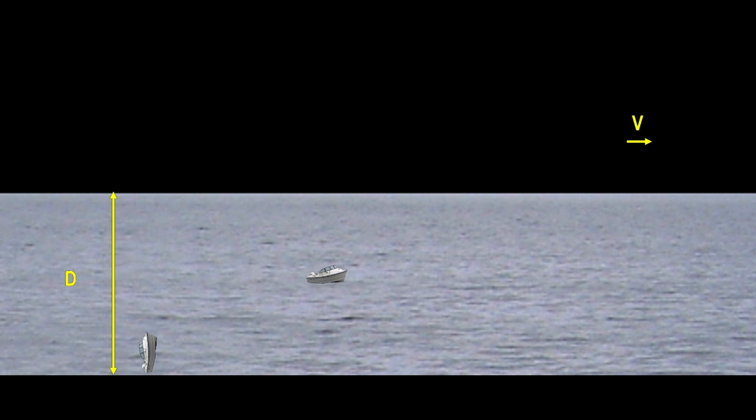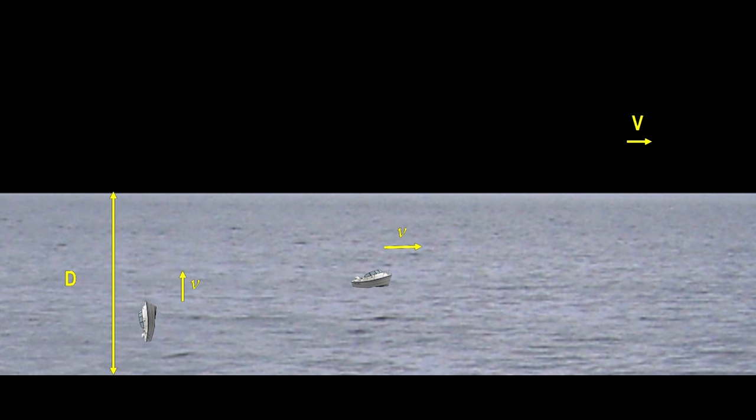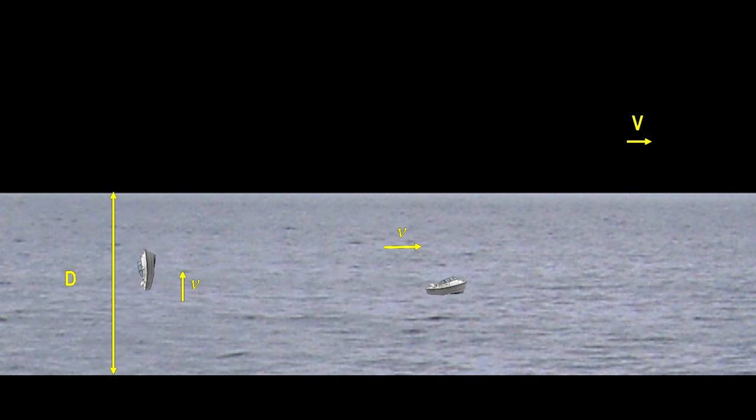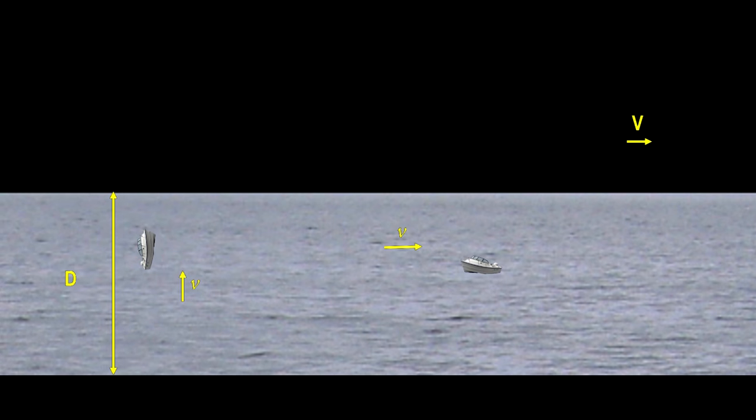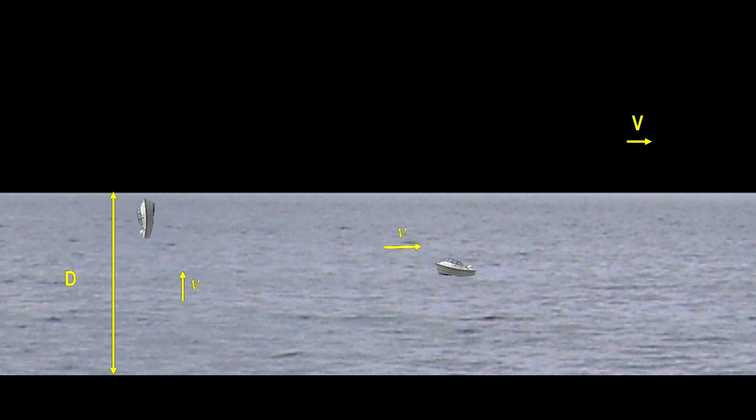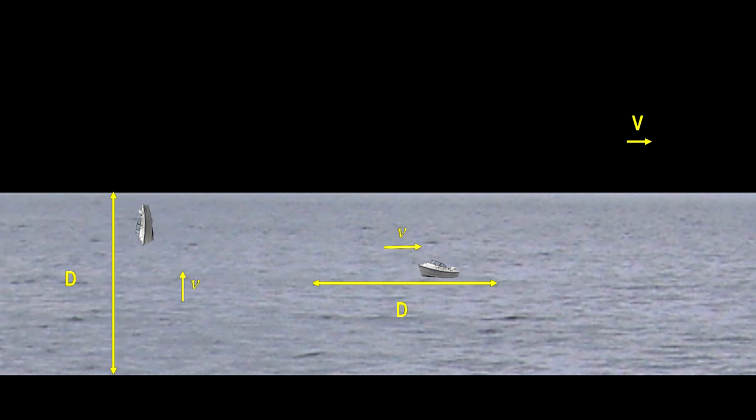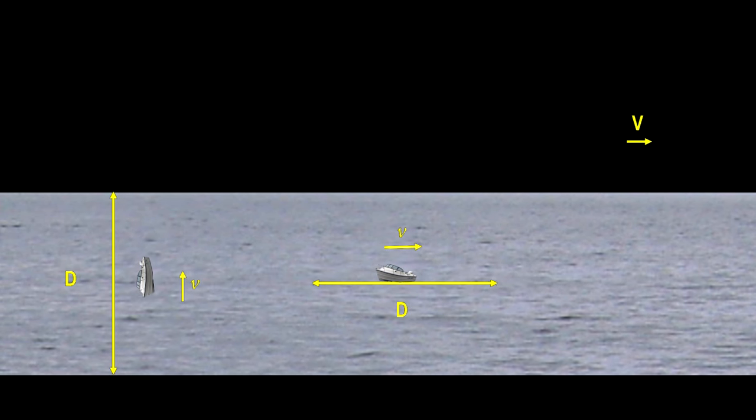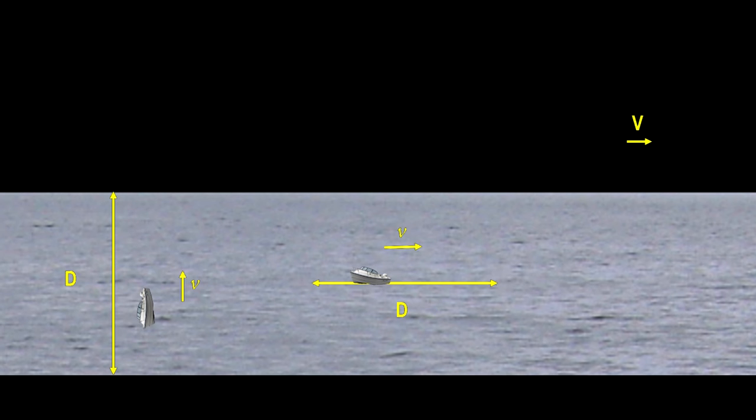A good way to see what's happening is to picture a river that measures d across and is flowing to the right with a speed capital V. Now we put two boats in the river, each moving with a speed lowercase v. One boat will move across the river to a point on the other bank directly opposite the starting point and then return. The other boat will travel downstream the distance d and then return to its starting point. We'll calculate the time required for each round trip.